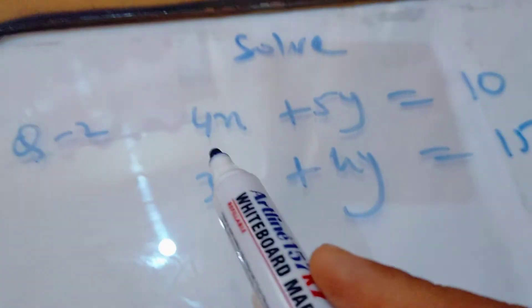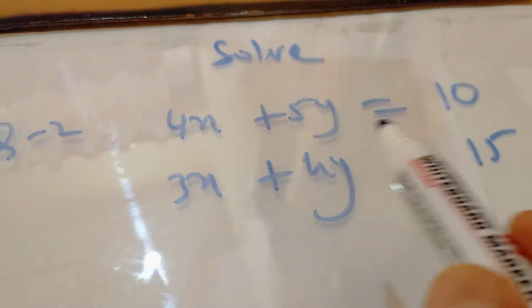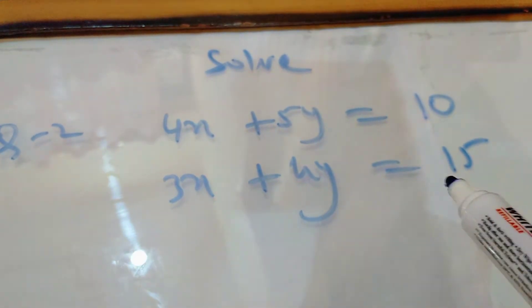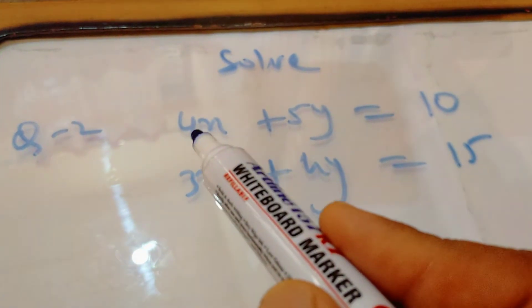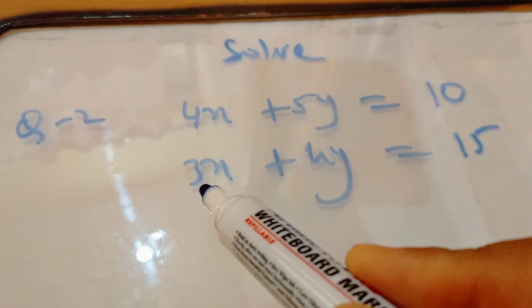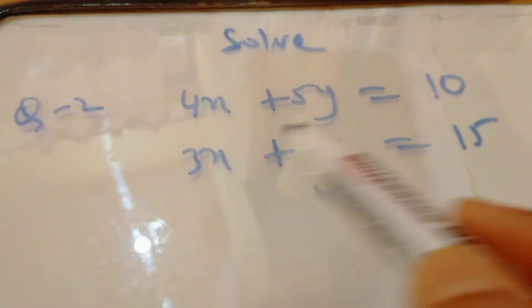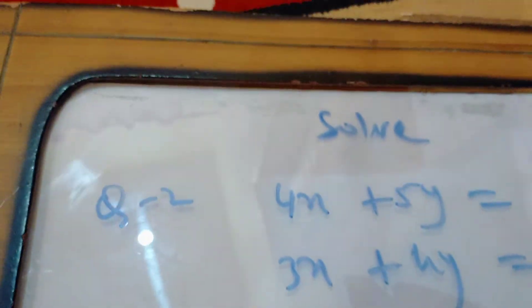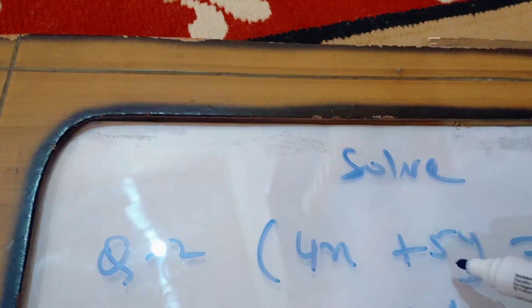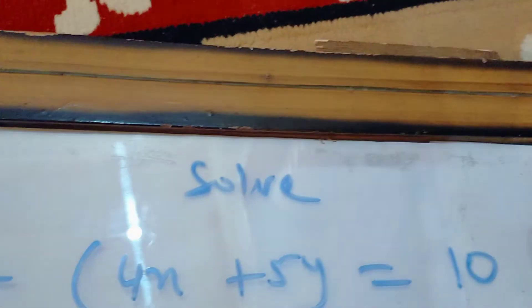Now look at the second question. We have to solve this: 4x plus 5y equals 10 and 3x plus 4y equals 15. Here you see the coefficient of x is 4, it is 3; coefficient of y is 5, it is 4, not equal. So I want to make them equal.